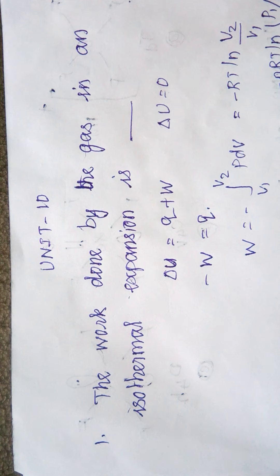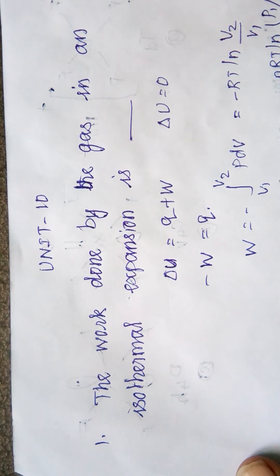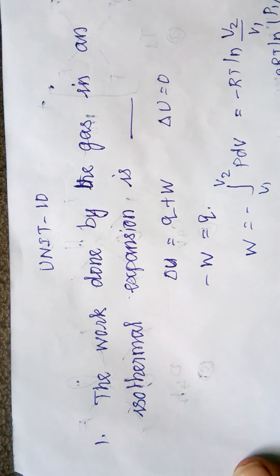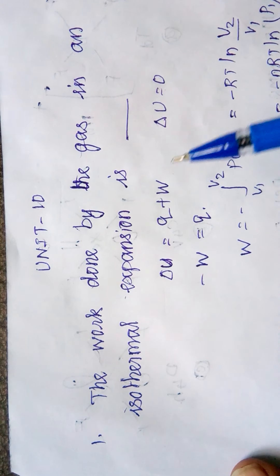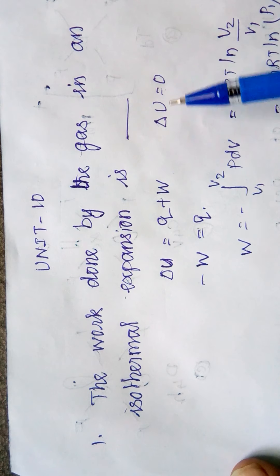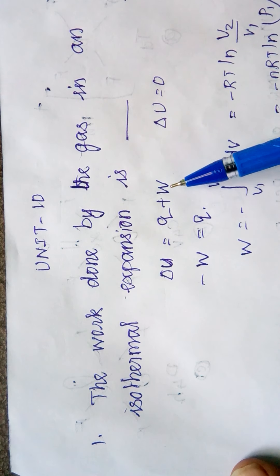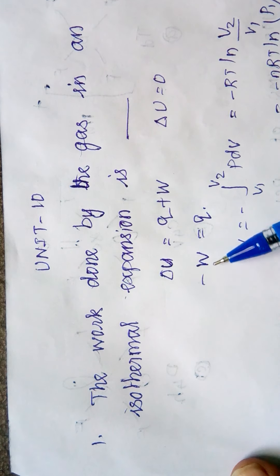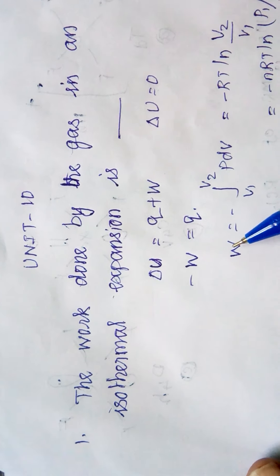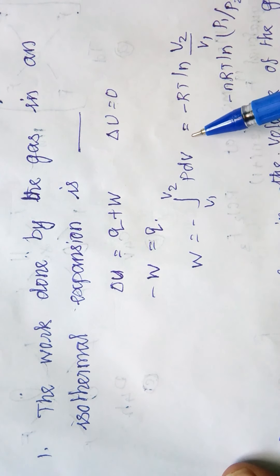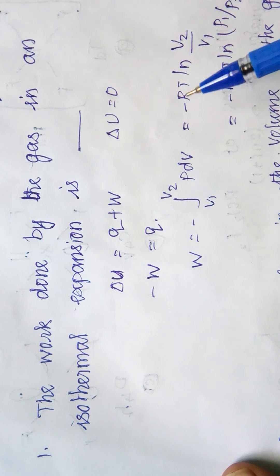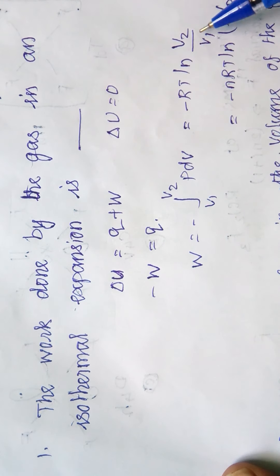The work done by the gas in isothermal expansion: in an isothermal expansion we know that ΔU = Q + W, but in an isothermal expansion ΔU = 0, so W will become -W = Q. On integration, W = -RT ln(V2/V1). This is one of our equations.